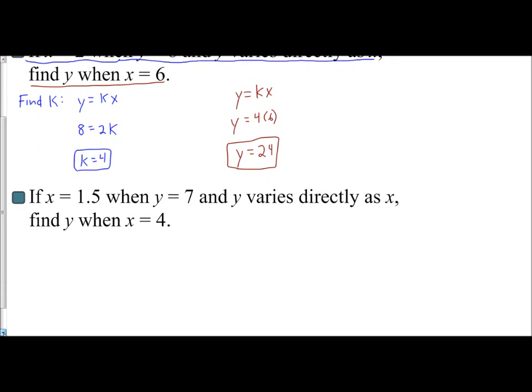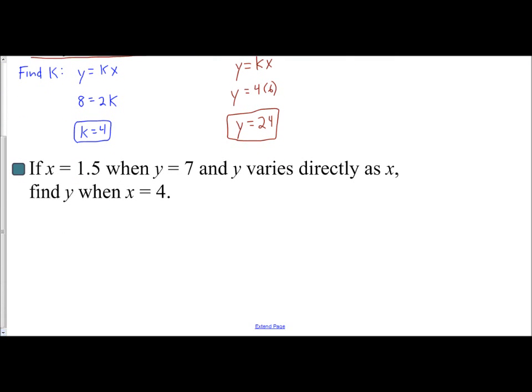So if x equals 1.5, when y equals 7, and y varies directly as x, find y when x equals 4. So the first part of this sentence, I use that information to find k first.